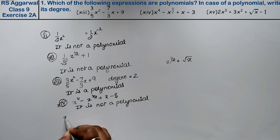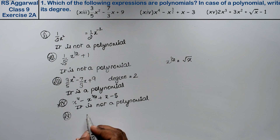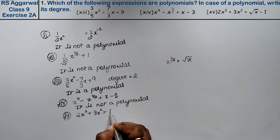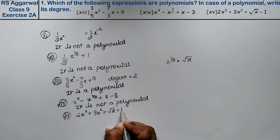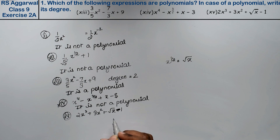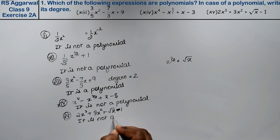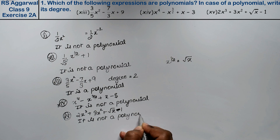The next part is 2x³ plus 3x² plus root x plus 1. Since root x means x to the power 1/2, which is a fractional power, it is not a polynomial.